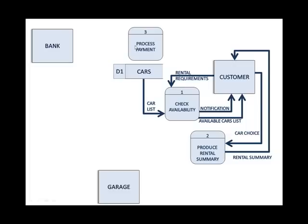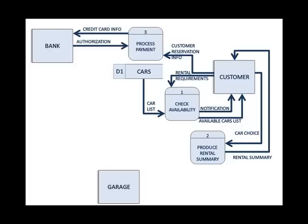The third process is to process the payment. In order to process the payment, I need the customer's reservation info including name, email, and credit card expiry date. I only need to send certain data to the bank — for example, there is no need for the email, but I do need the customer name, expiry date, and card number.